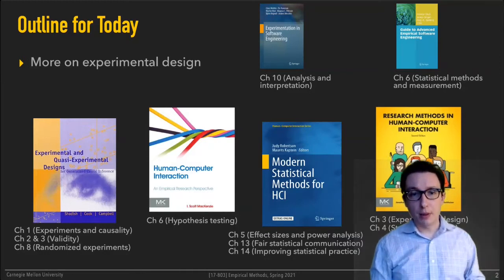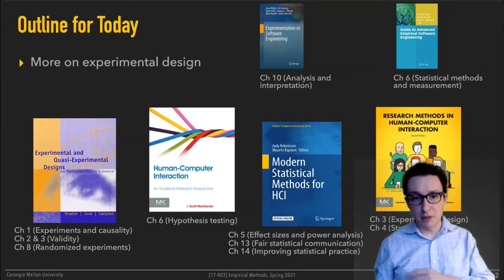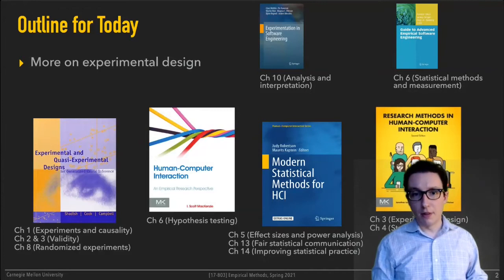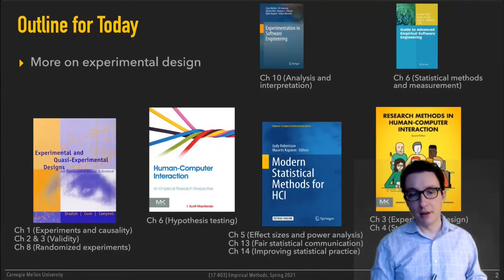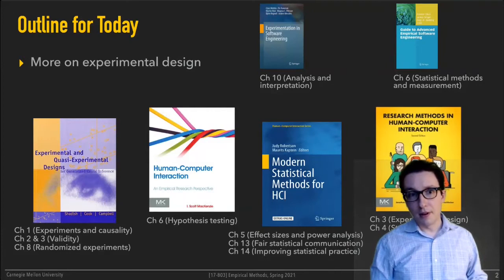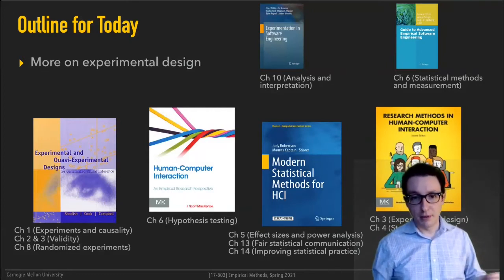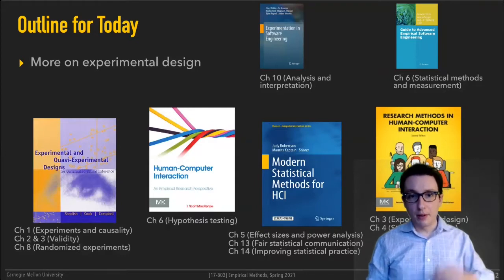On top you see a couple of references from software engineering. Those of you particularly interested in a software engineering perspective on empirical research could take a look at those. There's not much difference in the kinds of research questions that people ask in HCI compared to software engineering, at least as far as I could tell. You'll find two books from the software engineering community with chapters especially relevant for this series of lectures on experiments, measurement, and data tricks.